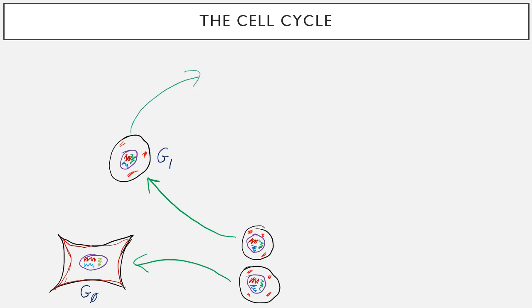After this, the cell is now nice and big. It stays about the same size, except its nucleus is going to have to get a little bit bigger. Because now we're going to copy our DNA. We're going to end up with two copies of the red DNA, two copies of the green DNA, and two copies of the blue DNA.